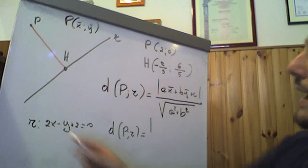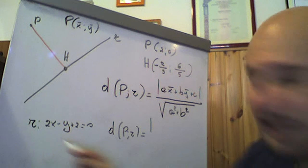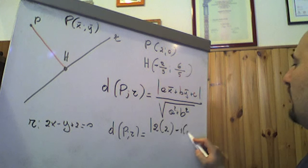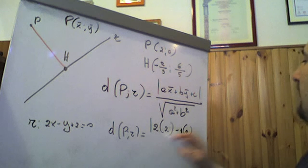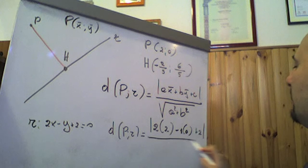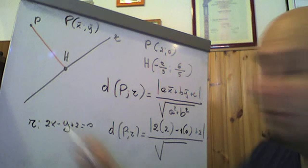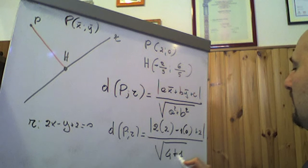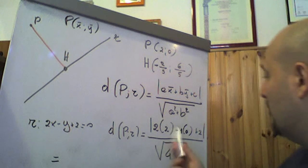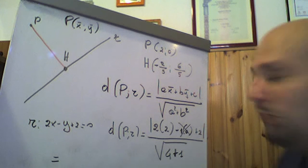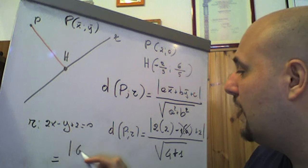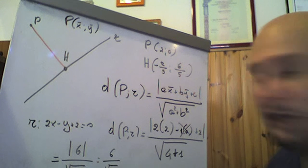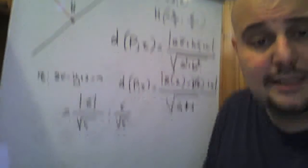Valore assoluto di: 2·2 (meno 1 che moltiplica 0, perché 0 è l'ordinata del punto P) più 2, modulo chiuso, fratto radice quadrata di A² + B²: 2² = 4, più (-1)² = 1. Uguale: 2·2 = 4, meno 1·0 = 0, più 2 è 6; modulo di 6 fratto radice di 5, ovvero 6/√5. Si può anche scrivere come 6√5/5.